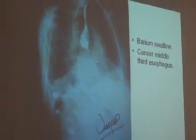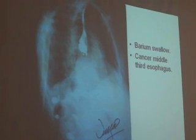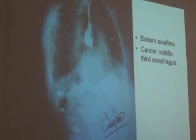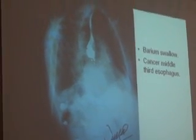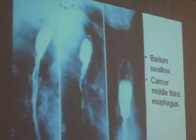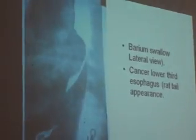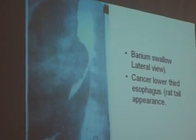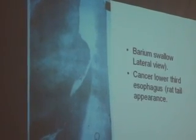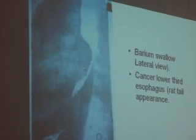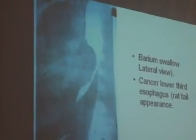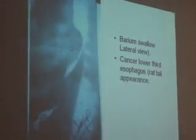Another barium swallow showing shouldering with absence of the lower part of the esophagus and the possibility of cancer of the middle third esophagus. Another shouldering with irregularity — cancer middle third esophagus. Multiple further cases of cancer middle third esophagus, with shouldering, erosion of the wall, and a mass bulging from the left or right side of the esophagus.